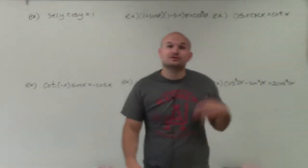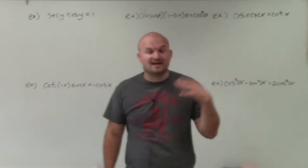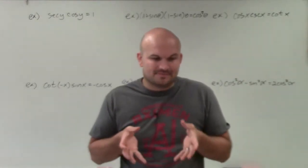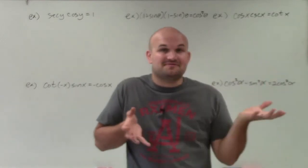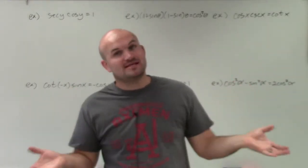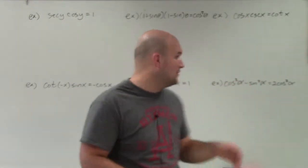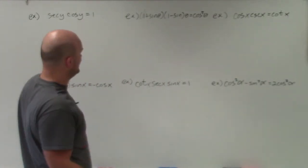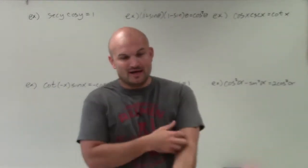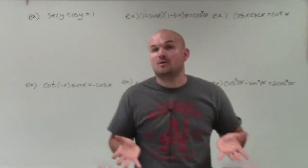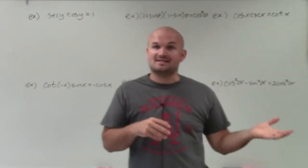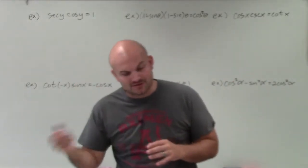Welcome, ladies and gentlemen. What I'd like to do is show you how to verify trigonometric identities. An identity is basically stating that the left side of an equal sign is the same as the right side. Here, you can see that none of our left sides or right sides are exactly equal to each other, so what we want to do — that's what verifying is — we're going to verify that one side is equivalent to the other side.